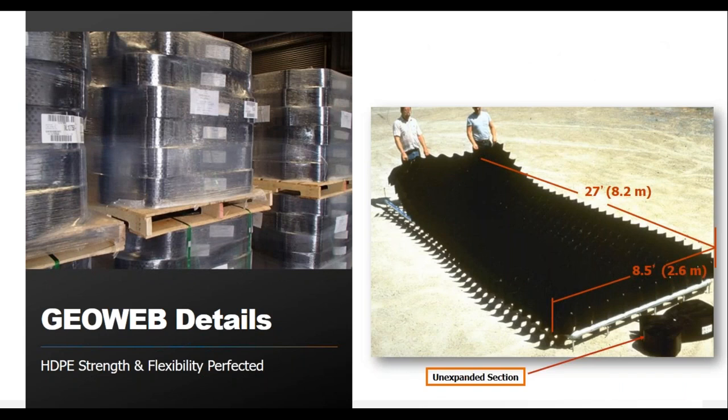Here you can see a typical geopanel. It comes tri-folded on a pallet. Each section has a nominal width of eight and a half feet, with lengths up to 52 feet depending on the cell size. The panels are very flexible and open like an accordion. They ship very efficiently — for 30-VR standard material, about 12 sections ship on a pallet, and up to just over 100,000 square feet on a typical truck.